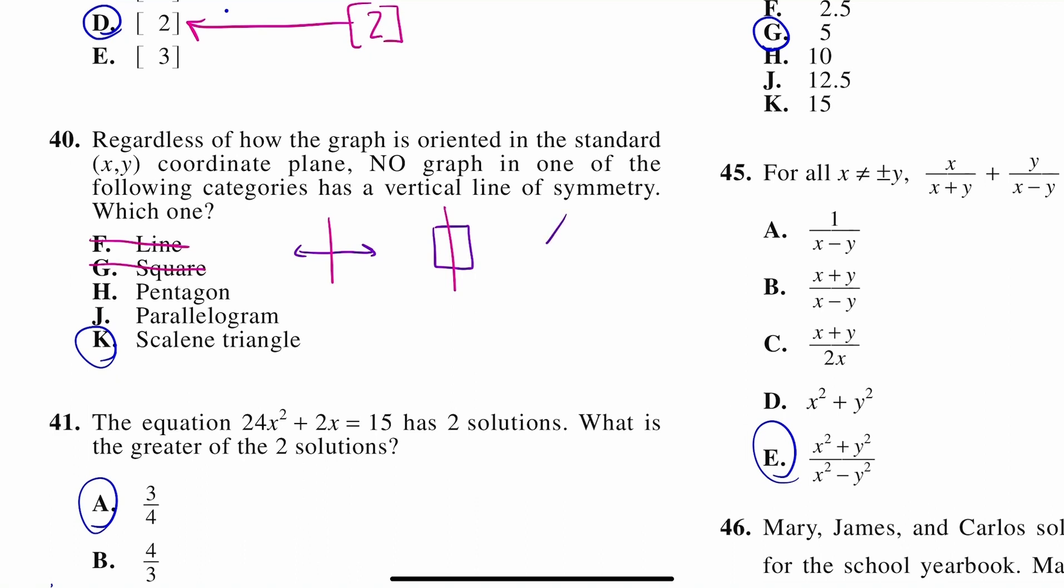So a line has a line of symmetry. You can fold that in half, so we can cross it out. A square also has multiple lines of symmetry. A pentagon, we know that's five sides, I could fold that in half right there. A parallelogram, if I fold it in half on that line, it would be the same on both sides. And then remember your scalene triangle, this is basically a triangle where none of the lines are the same. There's nowhere I could fold this triangle that would get it to be the same on both sides. So that's how we get letter K.